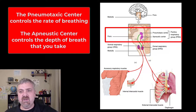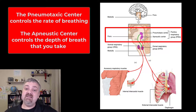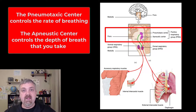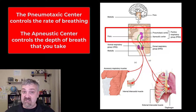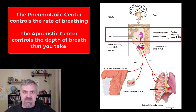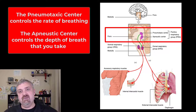The two parts of the pontine respiratory group are the pneumotaxic center and the apneustic center. The pneumotaxic center controls the rate of breathing — it determines when you should inhale and when you should exhale. Too much CO2 in your system, the respiratory rate will go up to blow it out; too little CO2, your respiratory rate will drop to keep it in. The apneustic center will determine the depth of breathing, so you can breathe deeper or more shallowly based on how much CO2 you should be getting rid of.